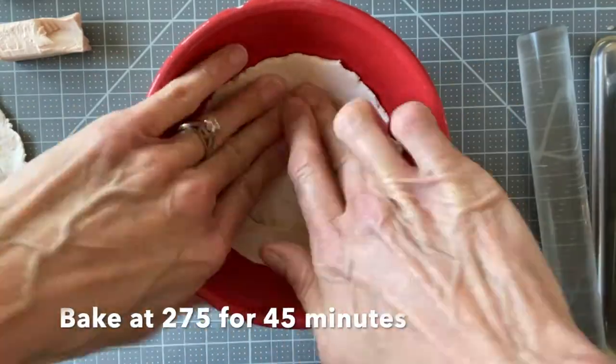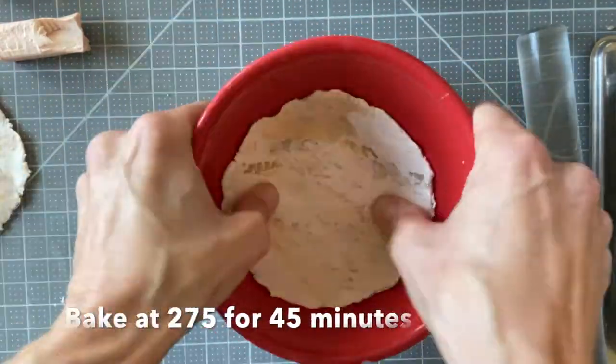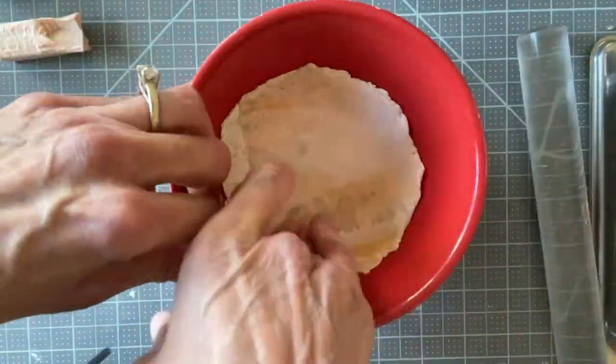Bake at 275 degrees for 45 minutes. When they're completely cool remove the bowls. They should come out pretty easily.